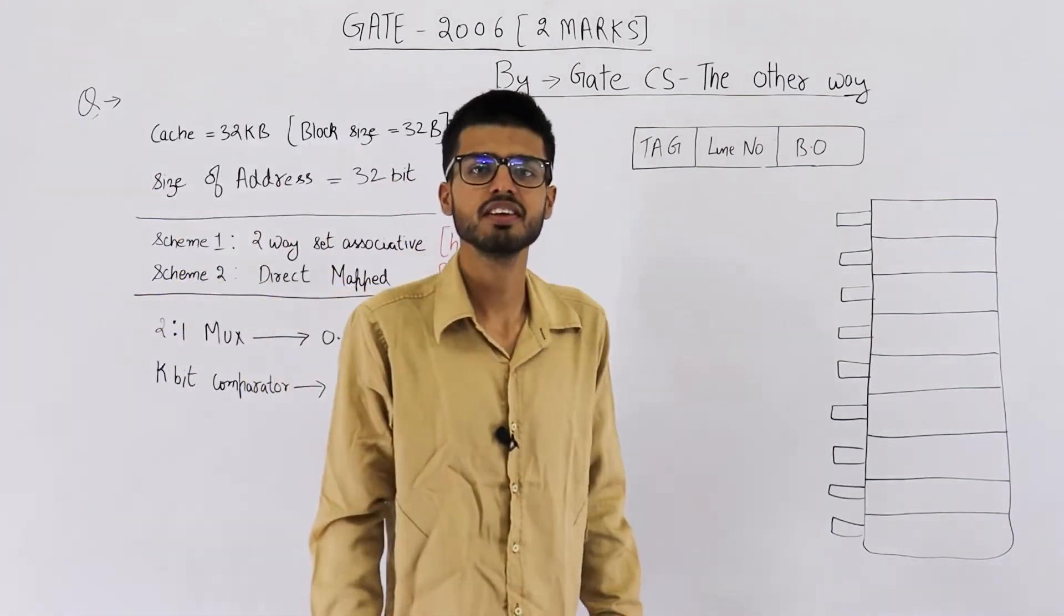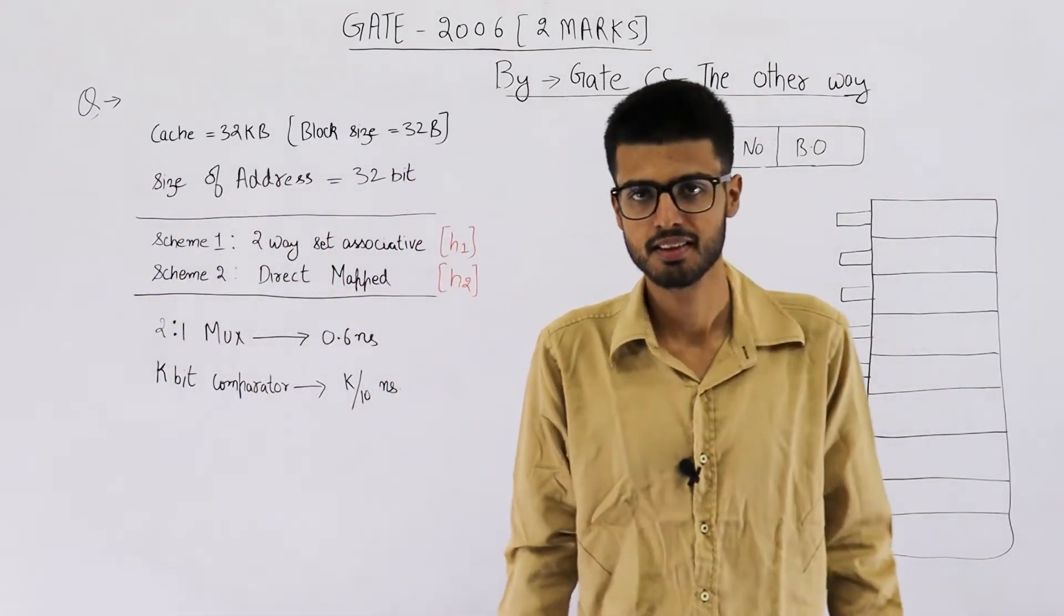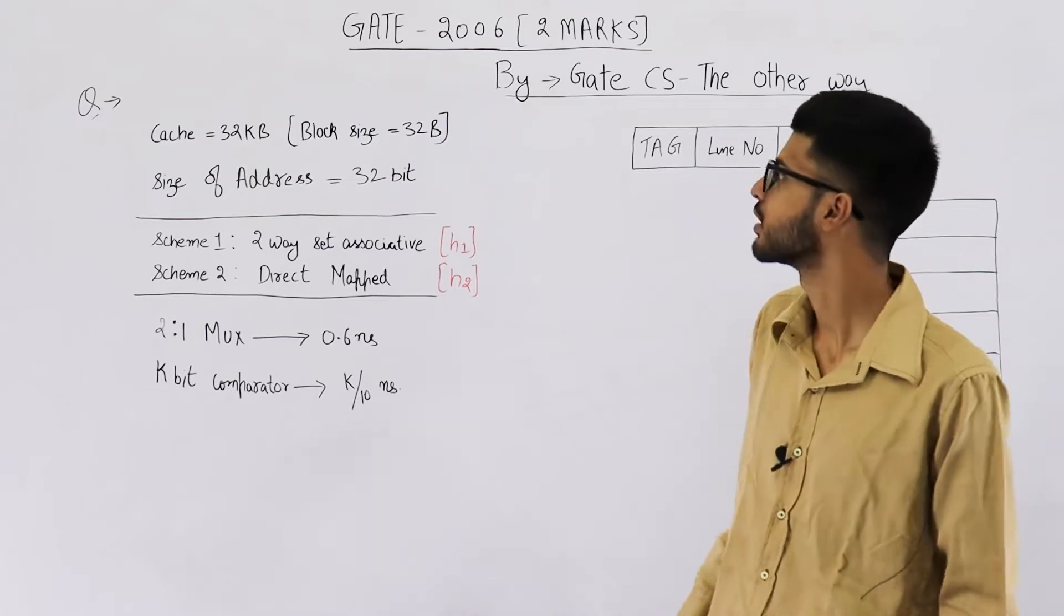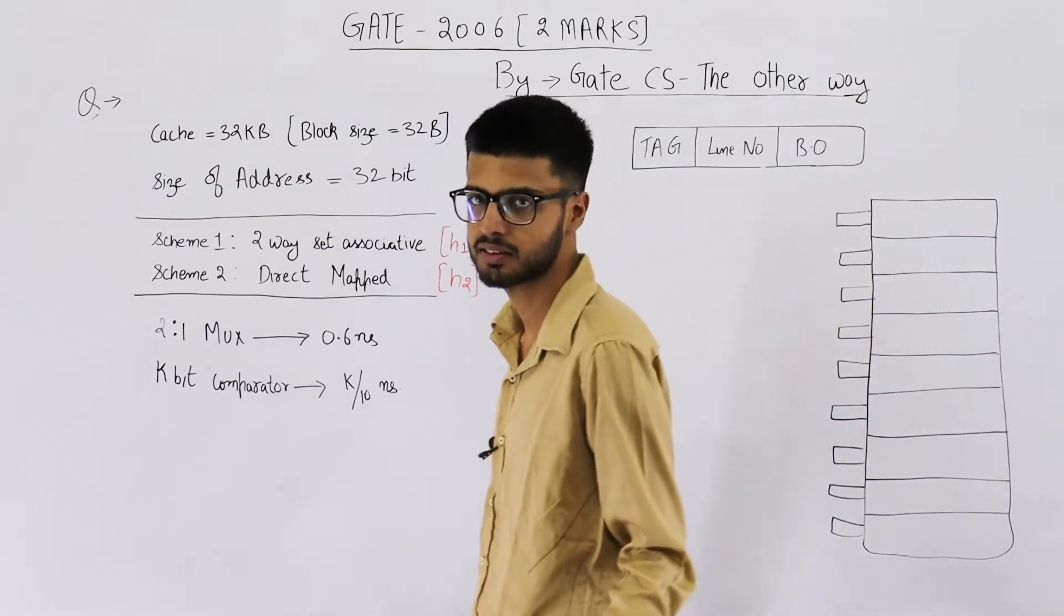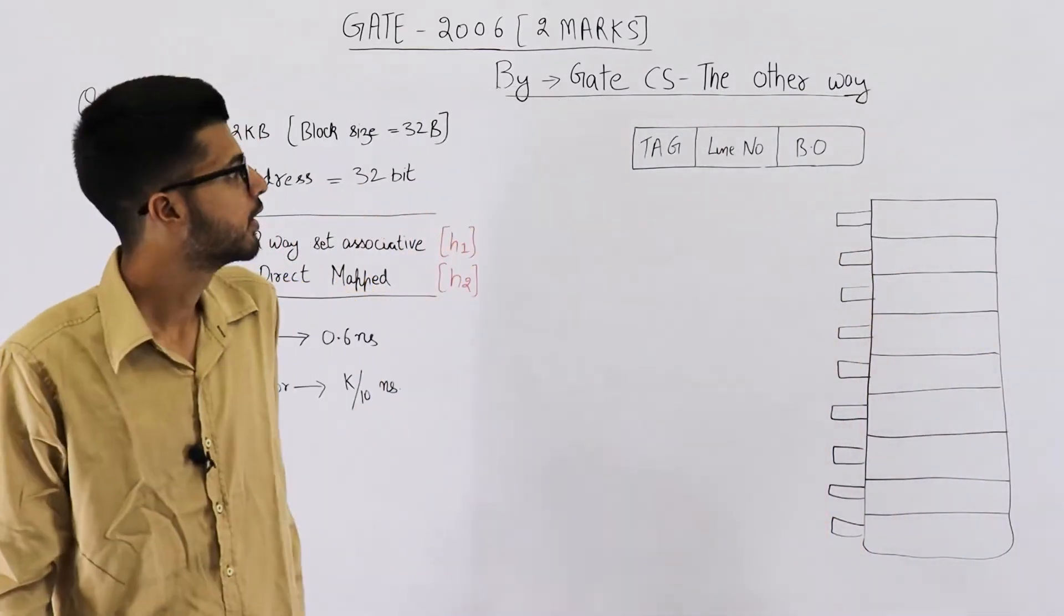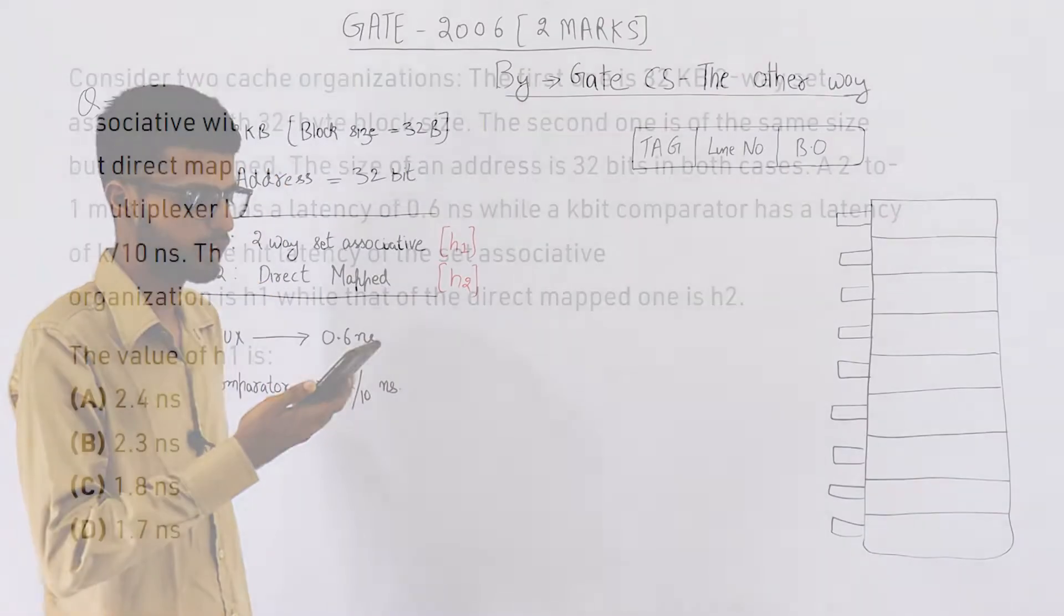Hello there students. This question is from GATE 2006 exam. It's a two-part question, that means four marks in total, two marks for each part. Let me read out its statement, then we'll solve it.